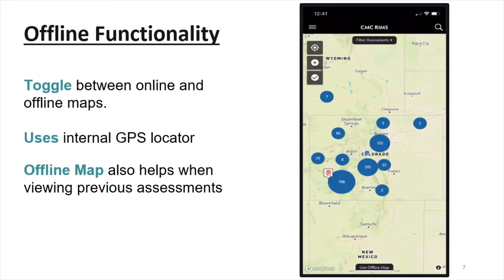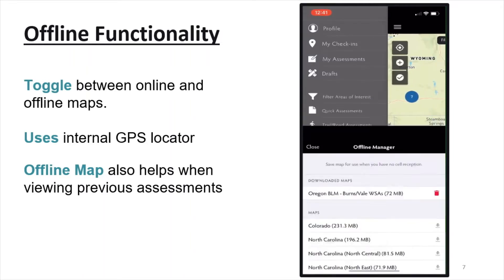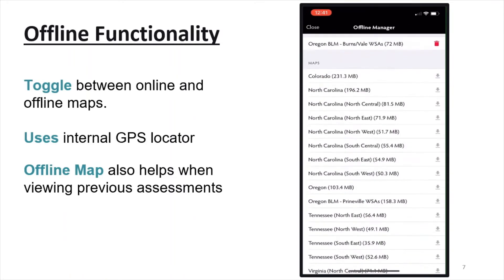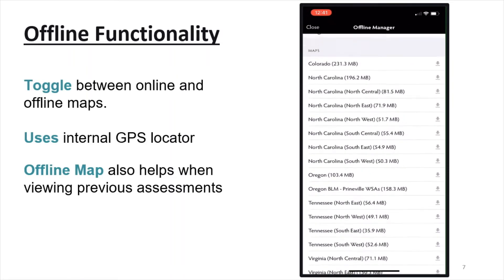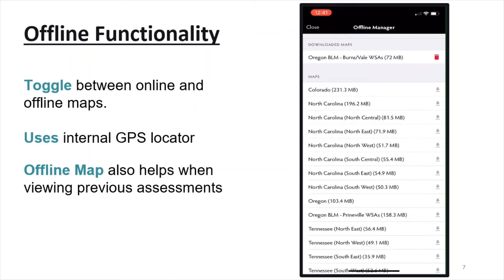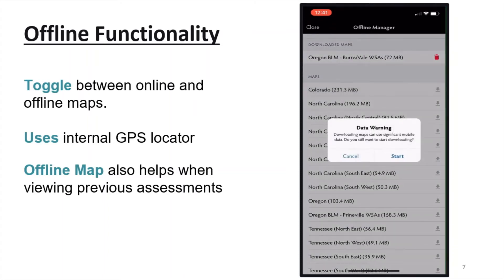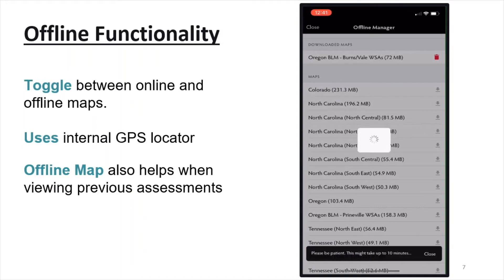An important component of the app is the offline functionality. The app uses the internal GPS locator and will still work without cell service. You can toggle between online and offline maps as you go in and out of service. A variety of downloadable offline maps are available as a base layer to use when working outside of cell service. This map must be downloaded before going into the field. If you are planning on using the RIMS app to resurvey assessments in the field and won't have service, be sure to load the assessments while you are still in service and don't exit out of the app.